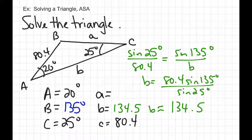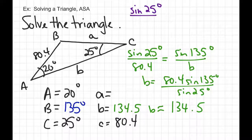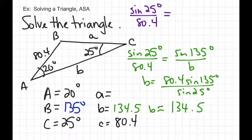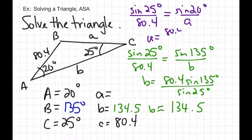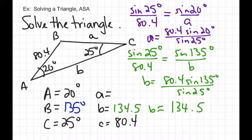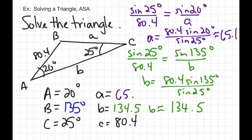Because this is not a right triangle, I can't use the Pythagorean theorem. So to find the last missing side, we have to use the Law of Sines again. To get the most exact answer, always use the originally given angle and side for your proportion. This time I set it equal to the sine of 20 degrees over a. Cross-multiplying, a is 80.4 times sine of 20 degrees divided by sine of 25 degrees, which gives approximately 65.1. And now the triangle is solved.